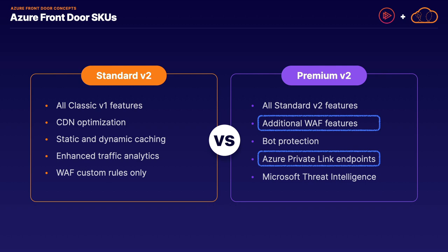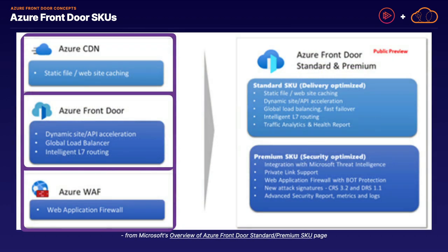With all these Azure Front Door SKUs it can be difficult to visualize the differences, so here is a Microsoft documentation image that clearly illustrates the key differences. The main thing to note is that Azure Front Door has the vanilla classic V1 SKU, and then the Standard V2 and Premium V2 SKUs, which are really composite services of Azure CDN, Azure Front Door, and Azure Web Application Firewall. The difference between Standard V2 and Premium V2 is whether you have a delivery-optimized or a security-optimized solution.